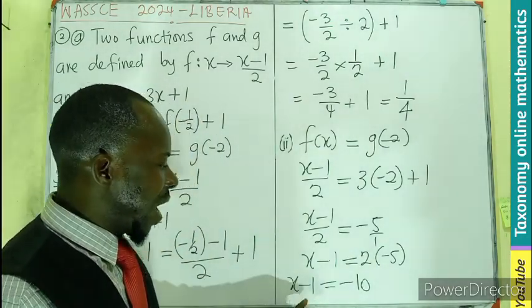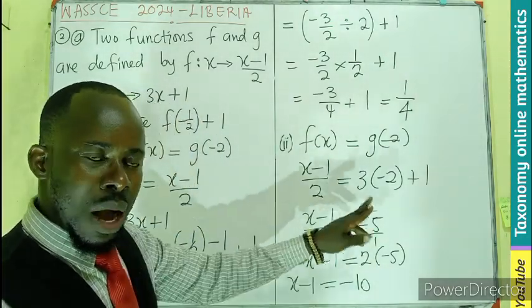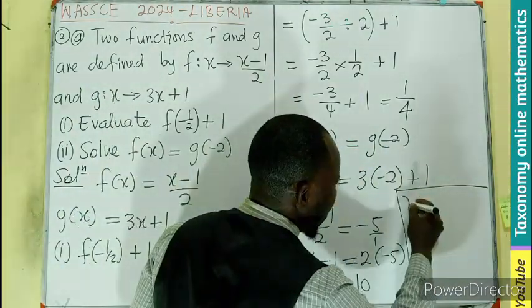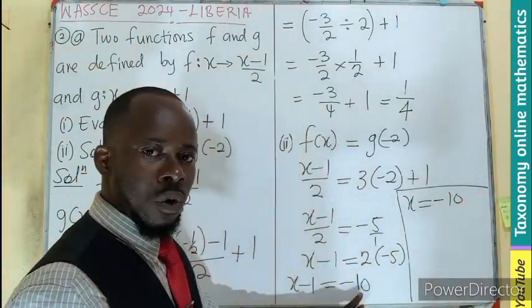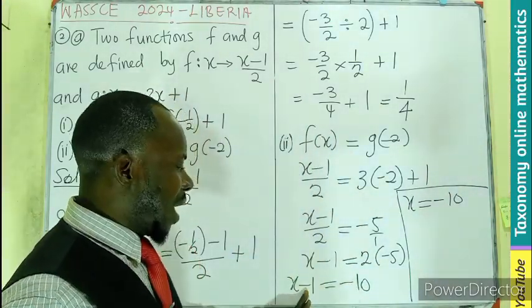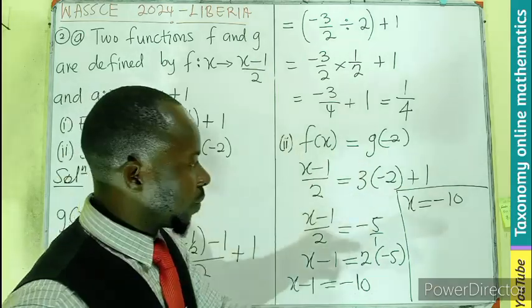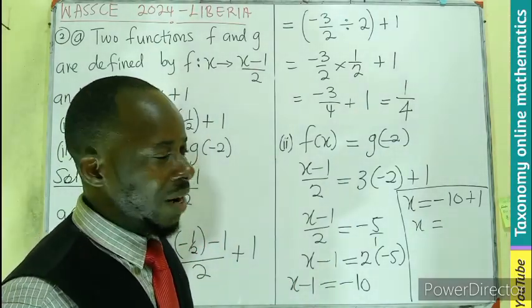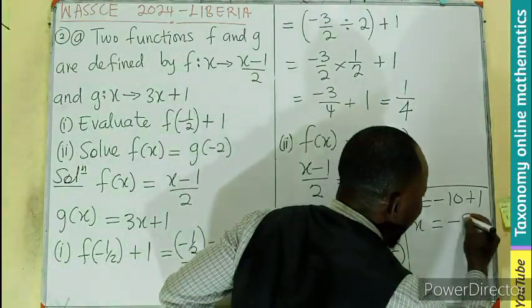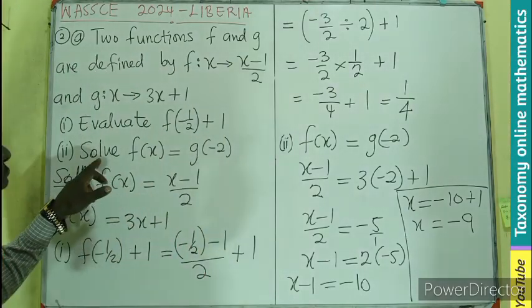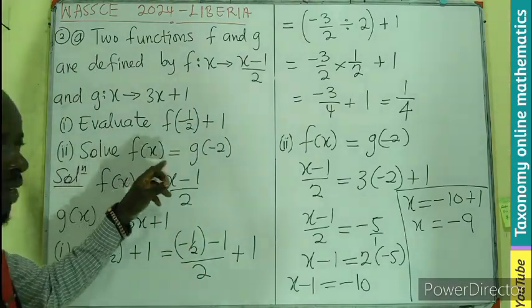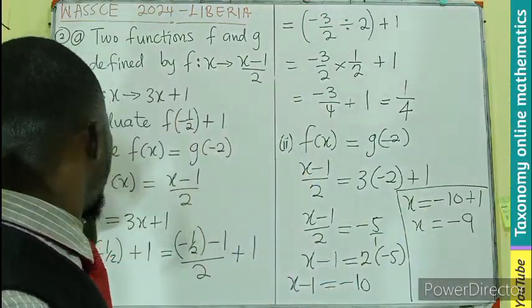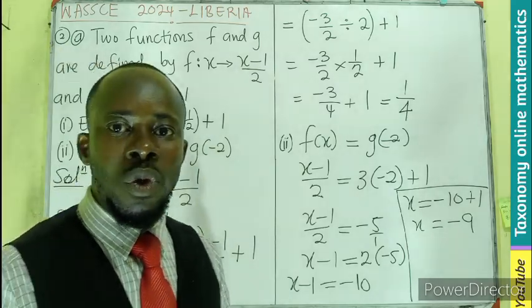So we transpose the minus to become positive. Permit me to buy space here. So now I will be having my x equals -10, which is the 1 at the right there, then bringing in this as positive to become plus 1. That means x is going to be, if you have -10+1, that will be giving you -9. So the value of x, as I said, solve for x, we are looking for x. The value of x is going to be -9.